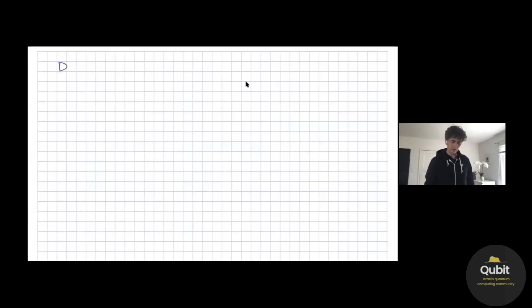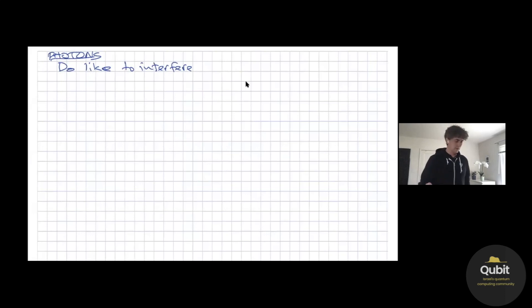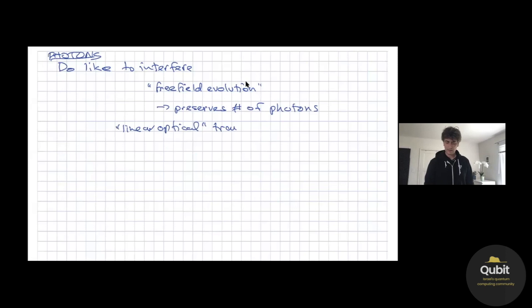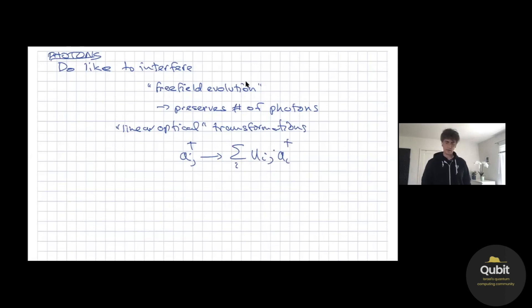So what do photons actually do? Photons like to interfere — they don't like to interact, but they do like to interfere. Interference is the free-field evolution; in terms of quantum field theory this is the quadratic part of the Hamiltonian. It basically preserves the number of photons — no change in photon number. We call these linear optical transformations because mathematically it's just a linear operator.